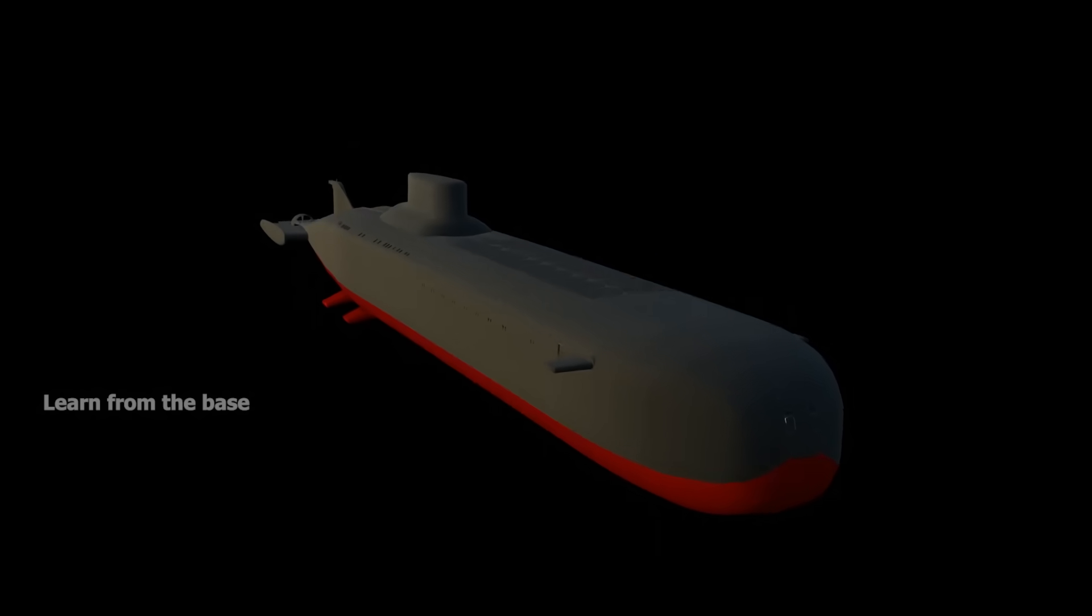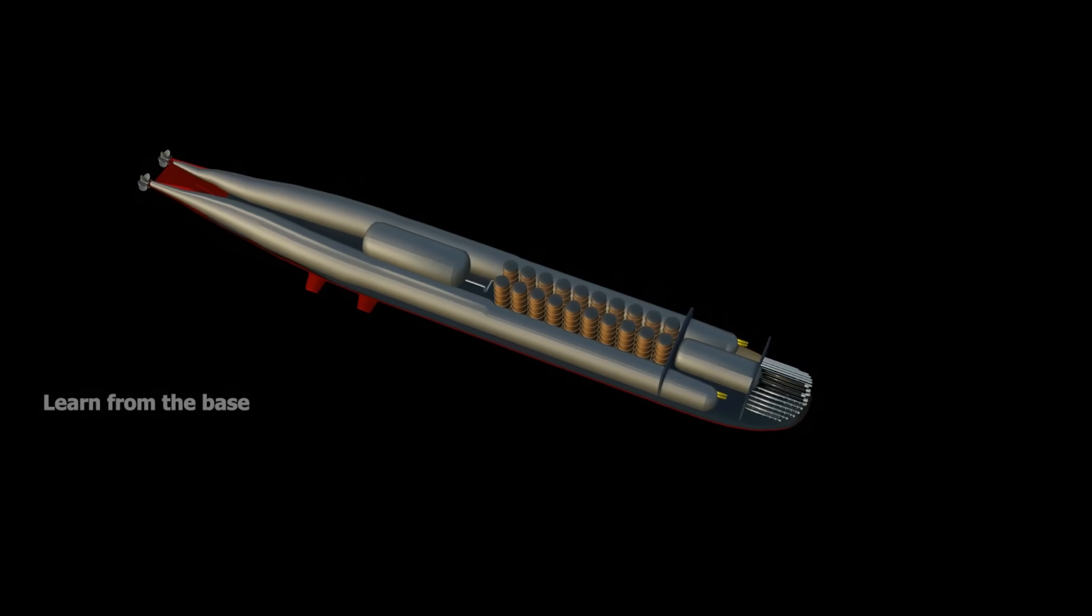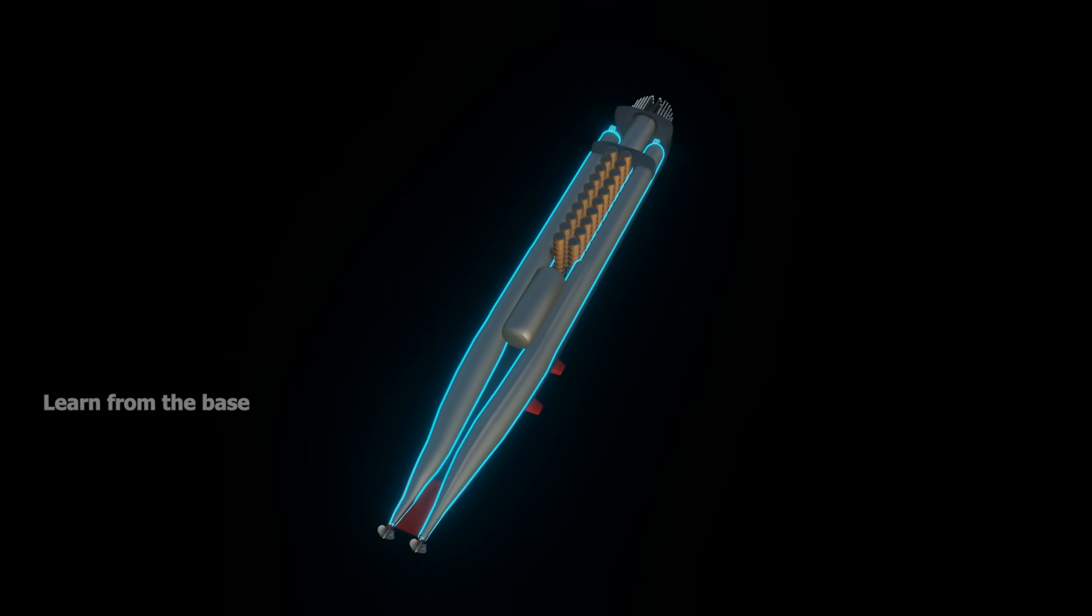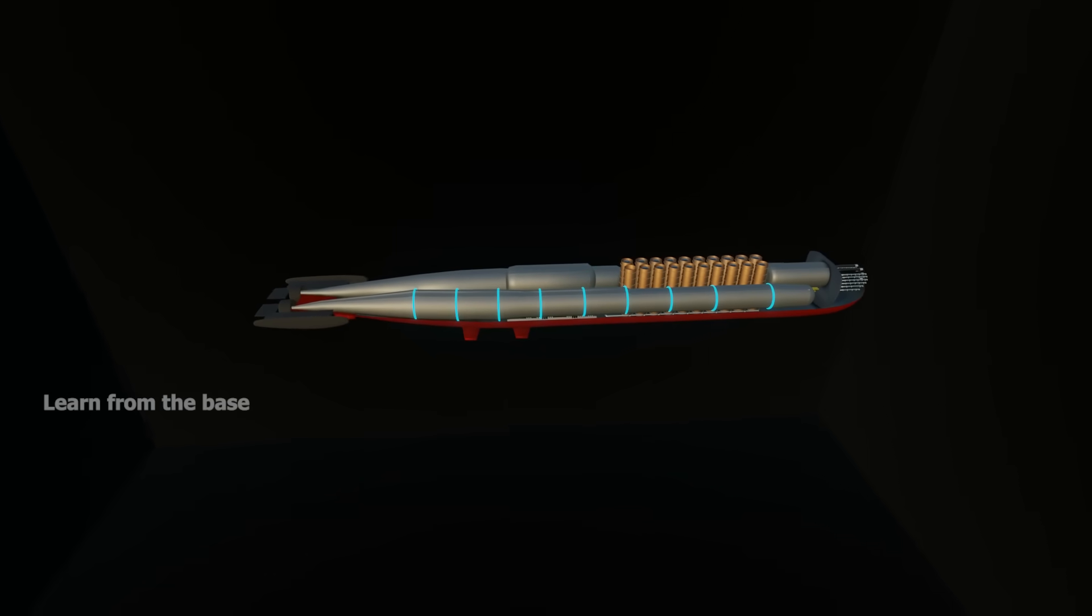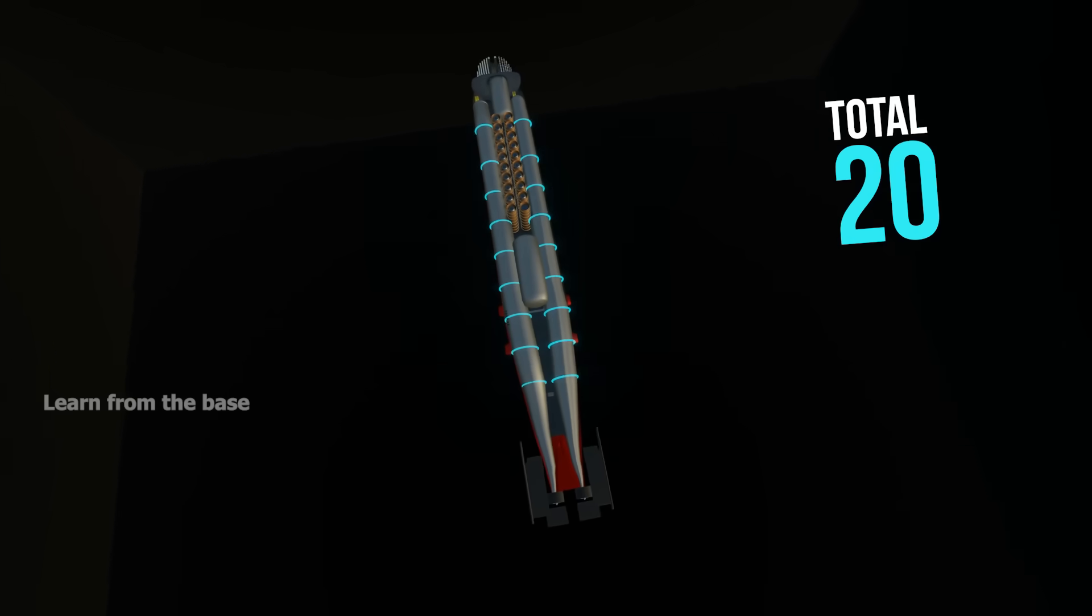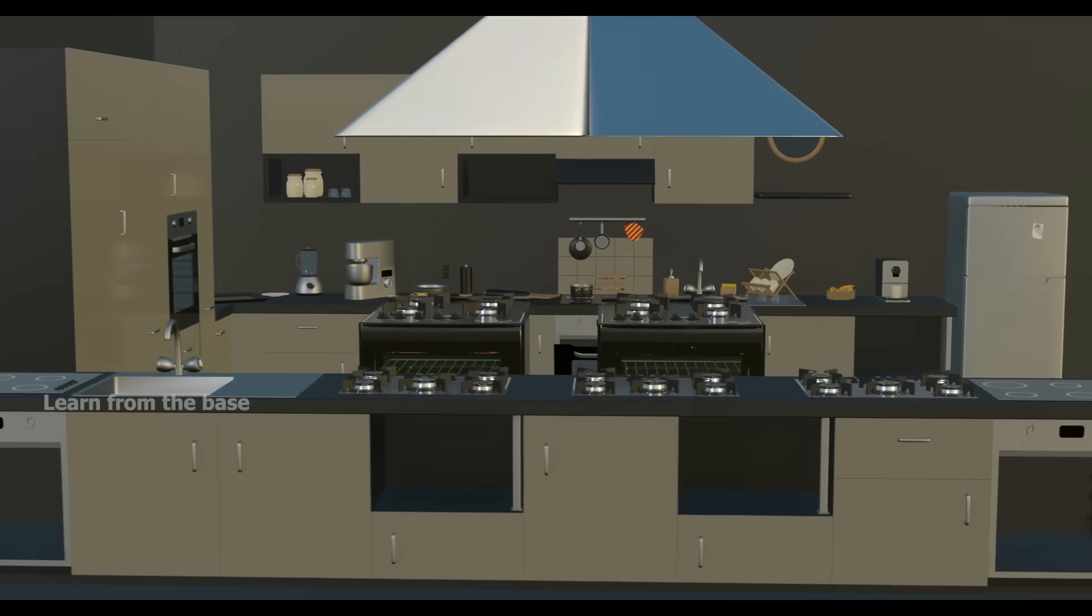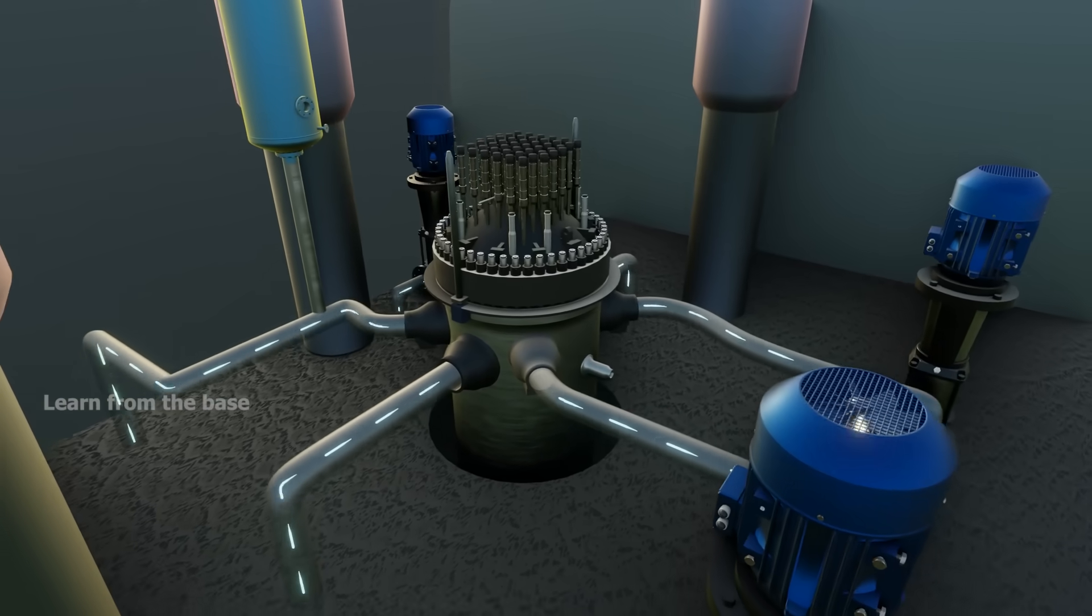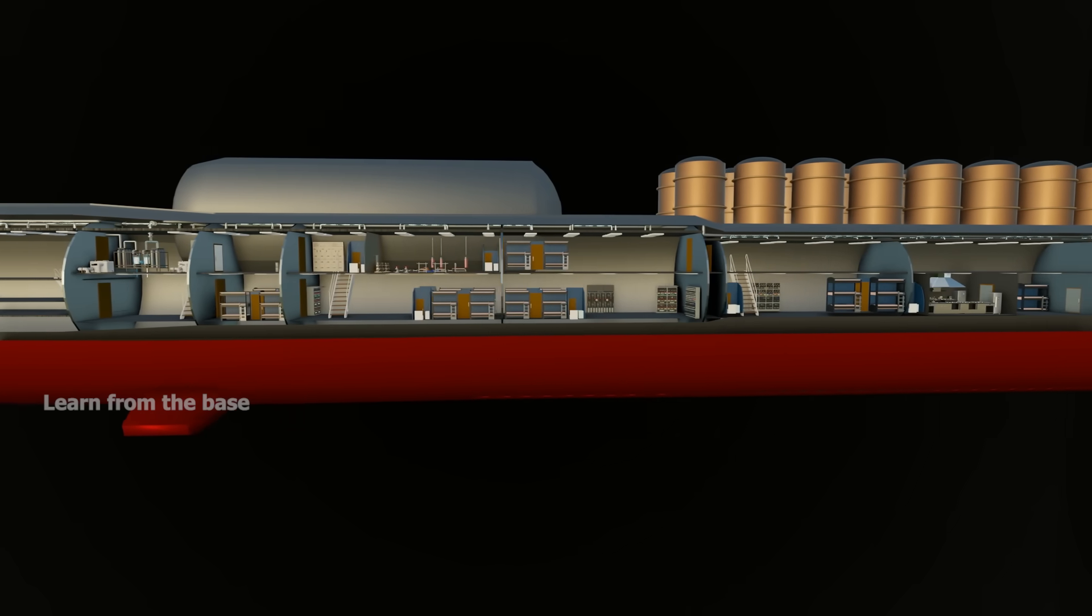The Typhoon-class submarine is of the multi-hull design with five inner hulls. These are the two main long pressure hulls. There are 10 compartments in each pressure hull, a total of 20 compartments that house the crew work area, restroom, kitchen, gym, reactor compartment, turbine room, pieces of machinery, and all other living facilities.